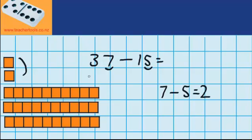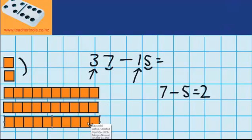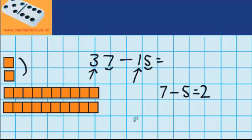Now I'm going to subtract my tens. You can see I've got 3 tens, and I need to take away 1 ten. So I'm thinking 3 tens minus 1 ten, or 30 minus 10. I think it's 20, but I'm going to use the materials to check. So I'm coming over here to delete 1 ten. There we go — that 10's gone now. So you can see that leaves me with 2 tens, or 20.